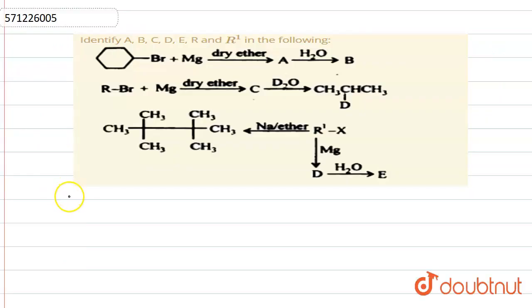Hello, the question is identify A, B, C, D, E, R and R' in the following. In the first group, we are given cyclohexane bromide in which magnesium is added in the presence of dry ether.